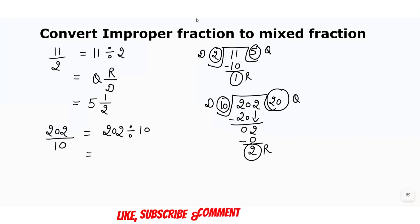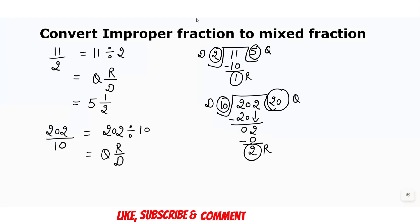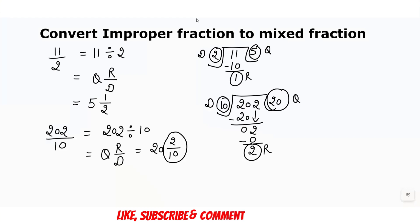Now we write the quotient in the middle, the remainder in the numerator place, and the divisor in the denominator place. That means it can be written as 20 and 2 by 10.